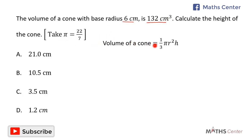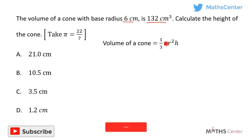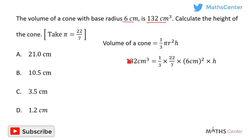The volume of a cone is given by the formula one divided by three times pi times r squared times h, where r is the base radius and h is the height of the cone. We have the volume as 132 centimeters cubed and the base radius as six centimeters, so we substitute this information to find h. The volume is 132 equals one third times 22 divided by 7 times 6 squared times h.